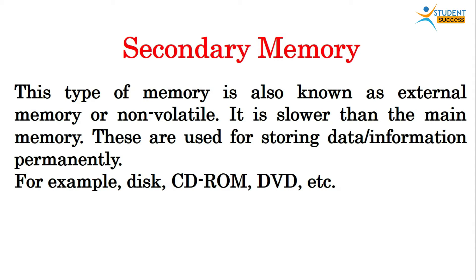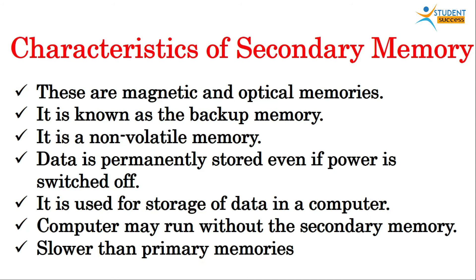Next is secondary memory. This type of memory is known as external memory or non-volatile memory. It is slower than main memory and is used for storing data and information permanently — for example, disk, CD-ROM, DVD, etc. Characteristics: these are magnetic and optical memories, known as backup memory, non-volatile in nature — data is permanently stored even if the power is switched off. A computer may run without secondary memory and it is slower than primary memory.